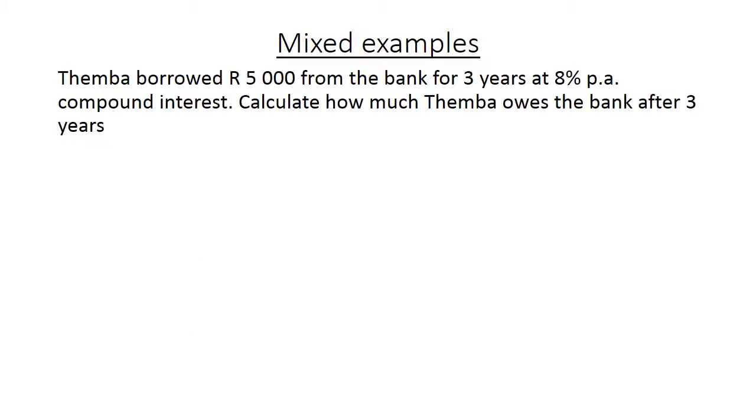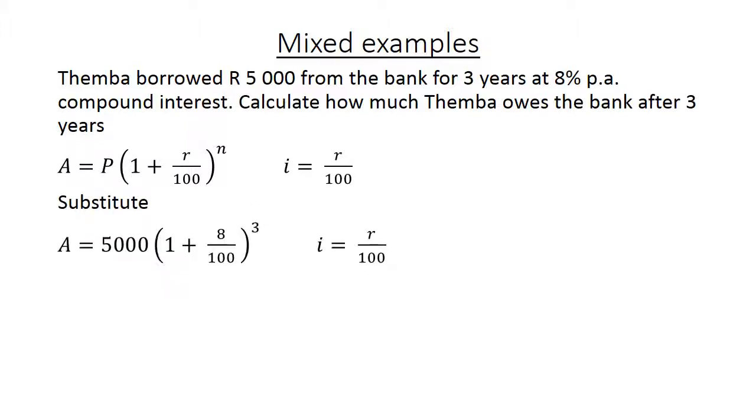Temba borrowed 5,000 Rand from the bank for 3 years at 8% compound interest. Calculate how much Temba owes the bank after 3 years. We start again with the same formula, but just remember compound interest, the n is to the power of. You substitute the 5,000 Rand. Inside the brackets is 1 plus 8 over 100, the 8%, and then you close the brackets to the power of 3. When you calculate this, the amount is 6,298 Rand and 56 cents. At the end of 3 years, Temba owes the bank 6,298 Rand and 56 cents.